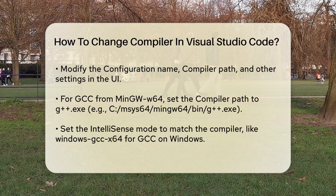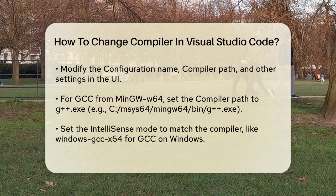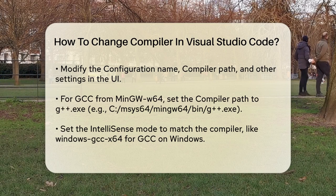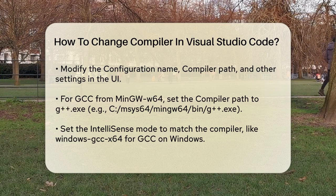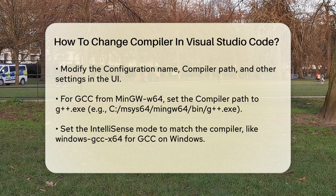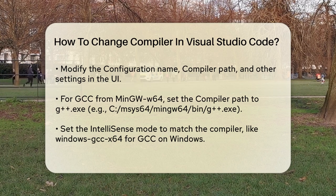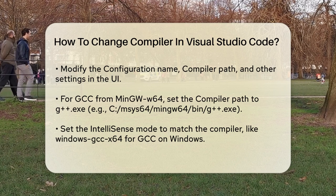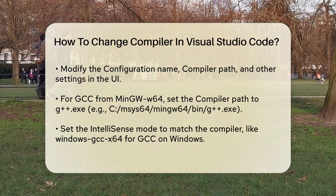For example, if you want to use the GCC compiler from MinGW-w64, you would set the compiler path to the path of the g++.exe file, typically something like C:/mingw64/bin/g++.exe. You also need to set the IntelliSense mode to match your compiler, such as Windows-GCC-x64 for GCC on Windows.